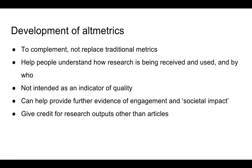For some people there was a perceived threat that altmetrics would replace traditional metrics, but actually altmetrics are there to complement traditional metrics — to give an extra layer on top of what we already know. It's to help people understand how their research is being received and used, and by whom. It's not intended as an indicator of quality. The higher the altmetric score doesn't necessarily mean the research is better, just as higher citations don't necessarily make a paper better than one with fewer citations.